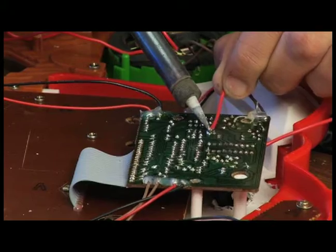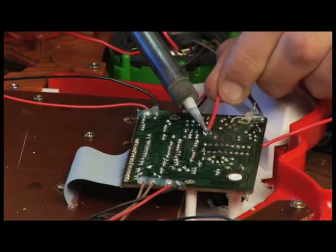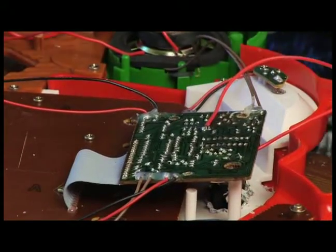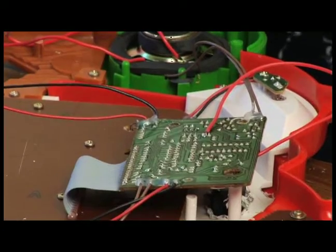Once you see that solder get liquid, pull the iron away. And so there we go. So now we have one joint made.